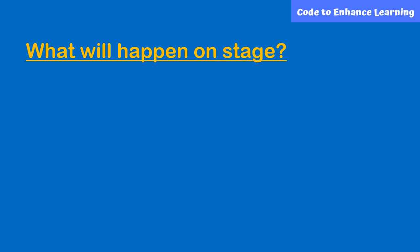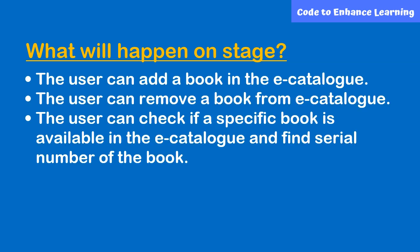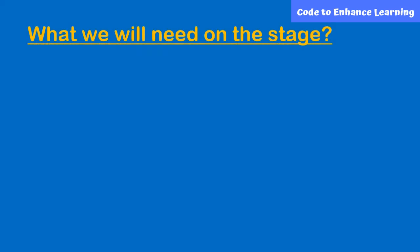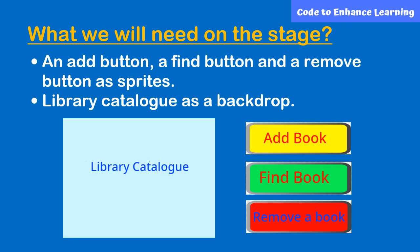Before we start making this project, let's think and note down the responses. The user can add a book in the e-catalog, remove a book from the e-catalog, and check if a specific book is available and find its serial number. We need an add book button, a find book button, and a remove book button as sprites.